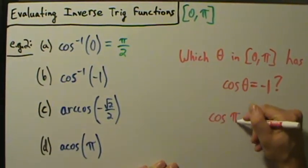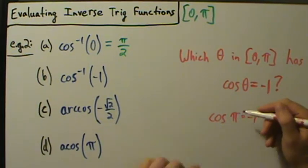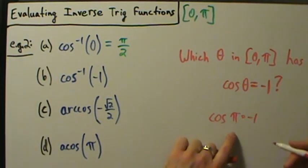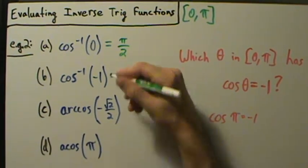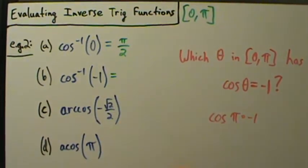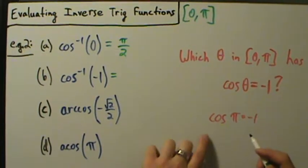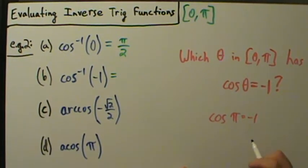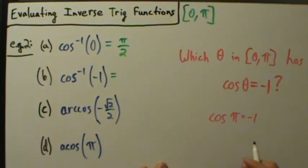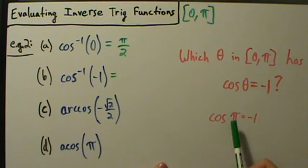Cosine of pi equals negative 1, so pi is our answer. It really is just a matter of knowing the unit circle and remembering the range. There are infinitely many numbers whose cosine is negative 1 — pi, 3 pi, 5 pi, 7 pi, negative pi, negative 3 pi, and so on — but the only number in the interval 0 to pi is pi.